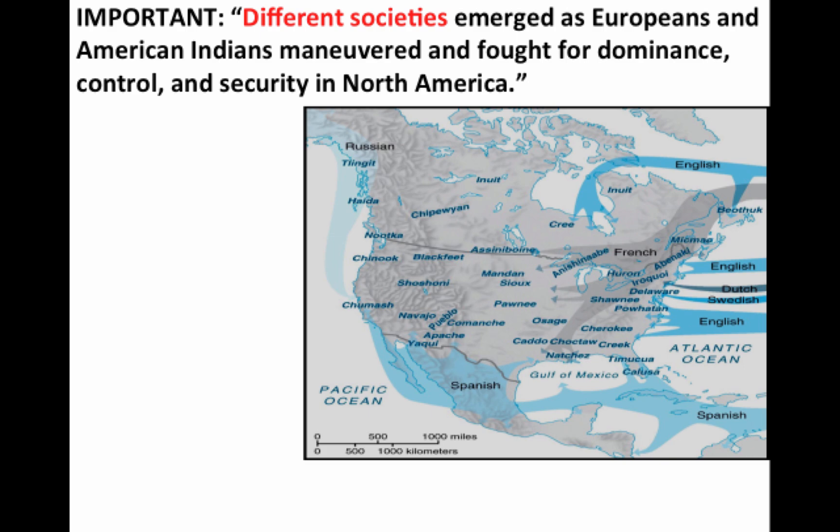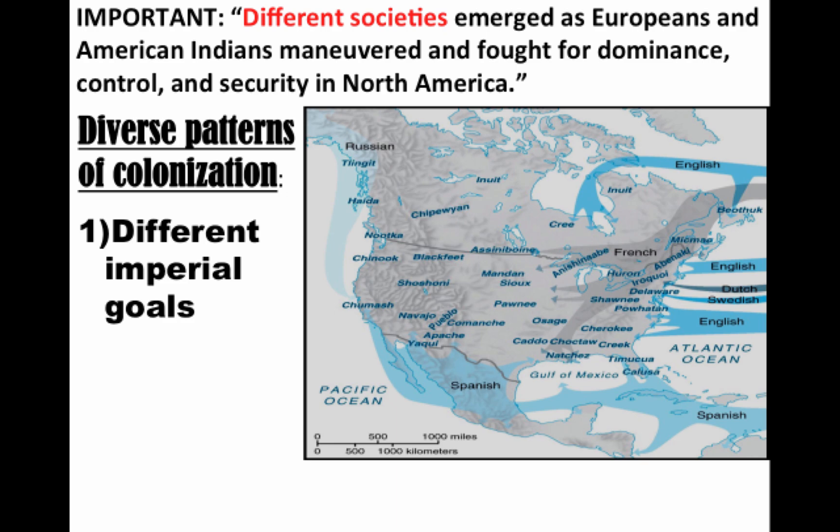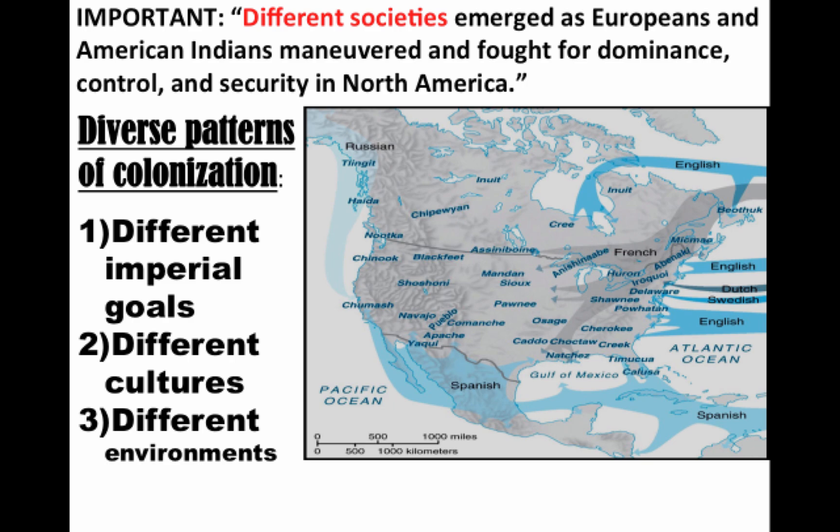Different societies emerged as Europeans and American Indians maneuvered and fought for dominance, control, and security in North America. Looking at the map, you have all these different Native American cultures that had been around long before contact, and then all these European countries coming in. These different patterns of colonization occurred because of the different goals of the Spanish, French, English, and Dutch — their different cultures — and the different environments in which they settled, resulting in societies very different and distinct from one another.